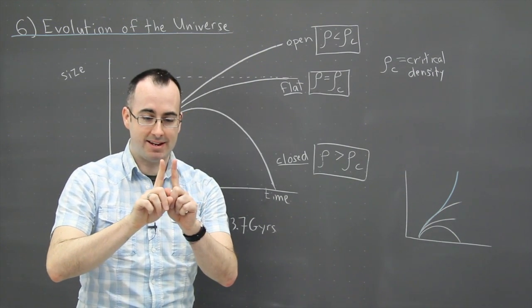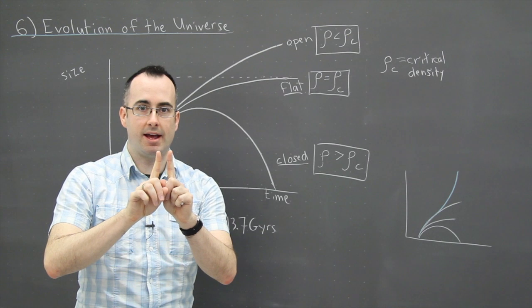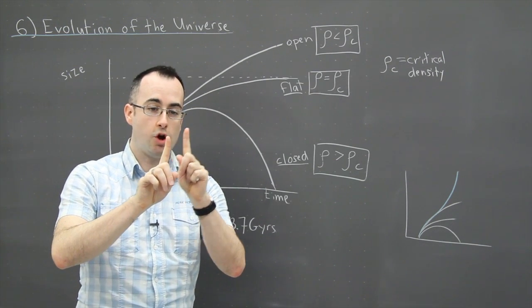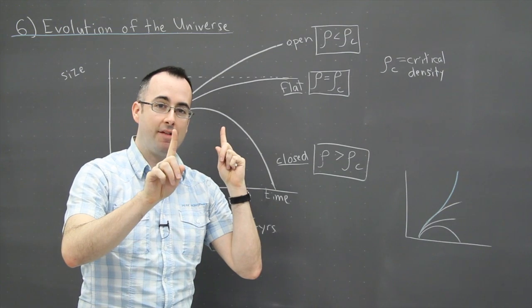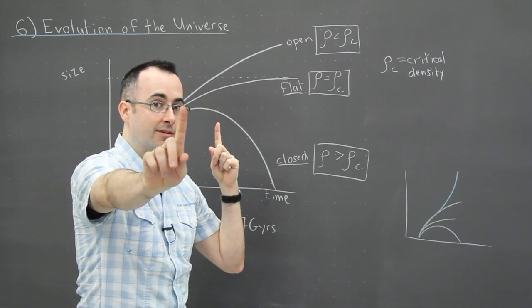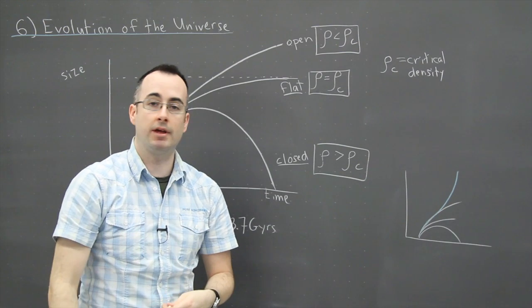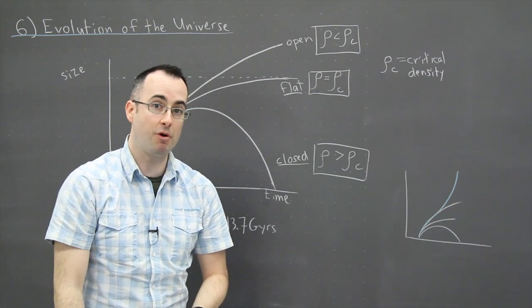Remember what that means then is that if we see one of these types of supernovas that looks dimmer we know that it's further, and if we see one that looks brighter we know it's closer. So this allowed them to map the distance to galaxies with precision that had never before been done.